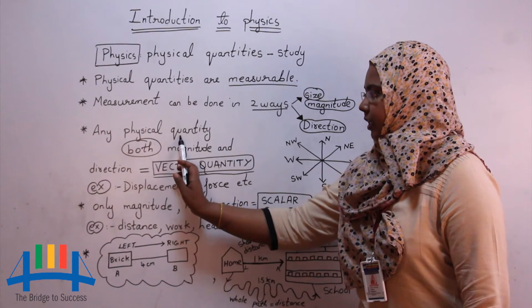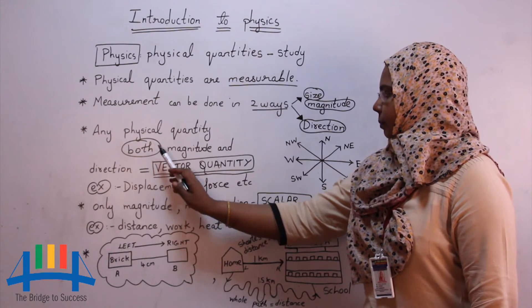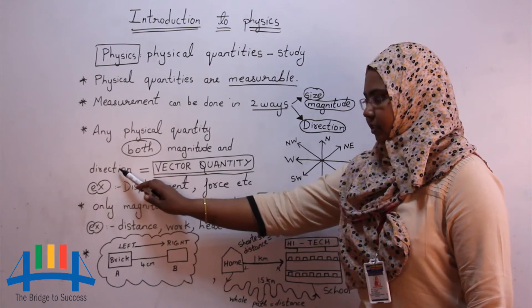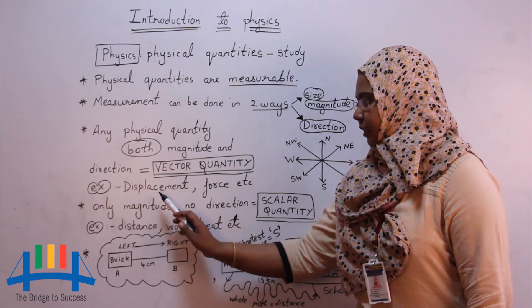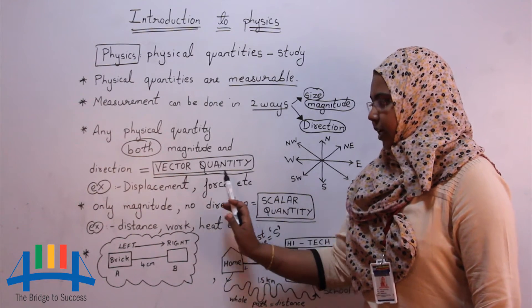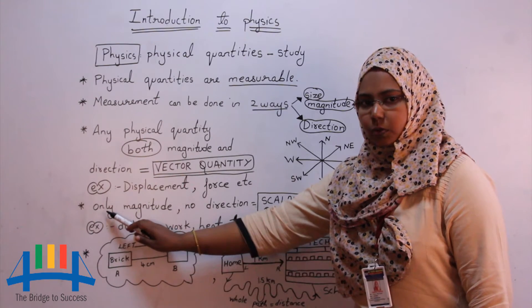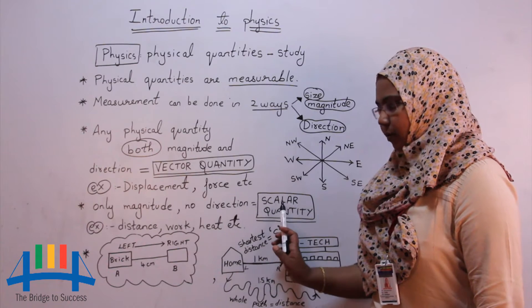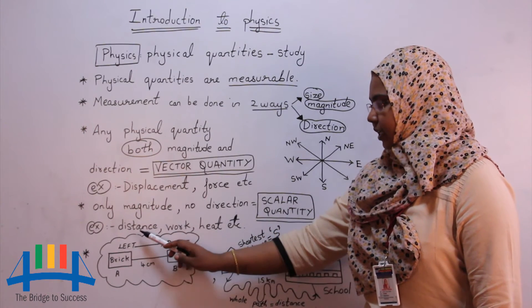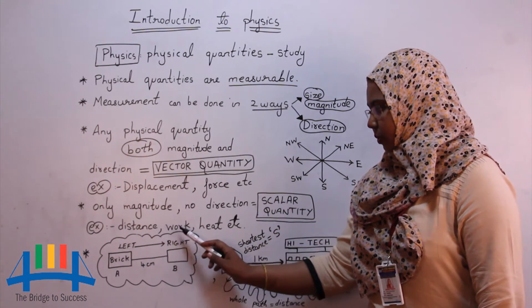Any physical quantity which have both magnitude and direction is called vector quantity. Example: displacement, force, etc. And the physical quantity which have only magnitude but no direction is called a scalar quantity. Example of scalar quantity is distance, work, heat.